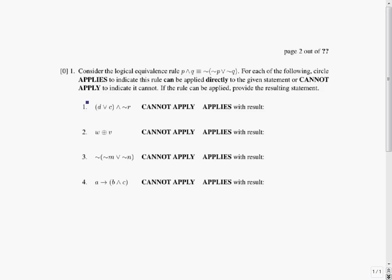So let's just try out the first statement here. In the first statement, we've got D or C and not R. So there's no negation on the outside, so we're not going to be using the right-hand side of the rule. We'll use the left-hand side of the rule. So we're going to try and match up against P and Q.